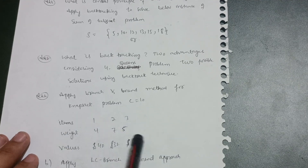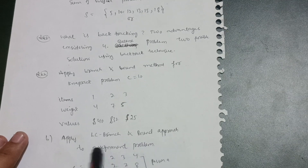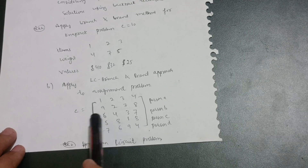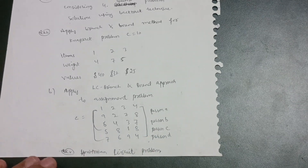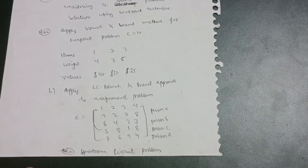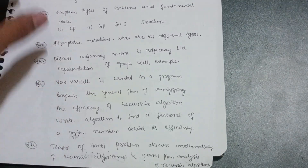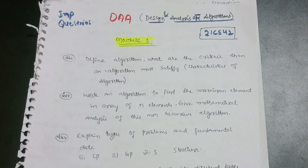Apply the LC branch-and-bound approach to the knapsack problem with capacity c=10 and given item weights and values. Also apply the branch-and-bound method to the assignment problem, and cover the Hamiltonian circuit problem. These are the important questions for Module 5 and for the overall DAA subject. Hope this helps you in the examination — thanks for watching.